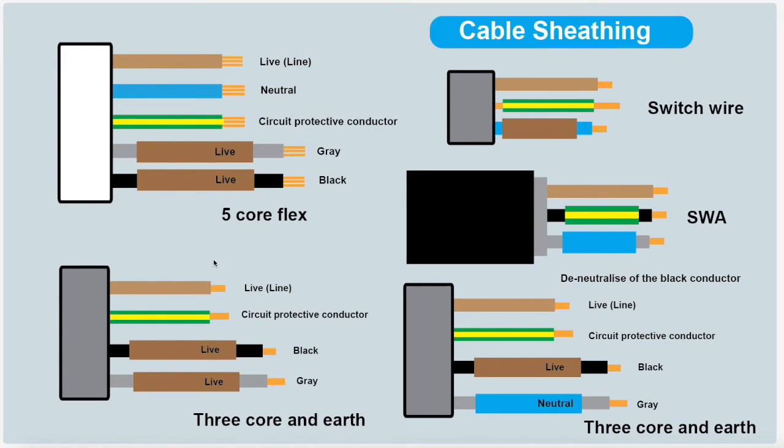Same on your 3 core and earth. Your brown would be your live. Your green and yellow sleeving would go over the bare copper conductor. That's only ever used as your circuit protective conductor. We sleeve that in green and yellow. And again your brown, your black and your grey would be sleeved in brown sleeving if they are switch wires. Now of course you've got the example in the 3 core and earth where you do need a neutral. So you've got your live, your brown, your CPC, the bare copper, that's your CPC. Now you've got your black and your grey. Now the guidance is that for the live conductor, for the black, you would sleeve that in brown sleeving. And you would use the grey as the neutral conductor and you would sleeve that in blue sleeving.